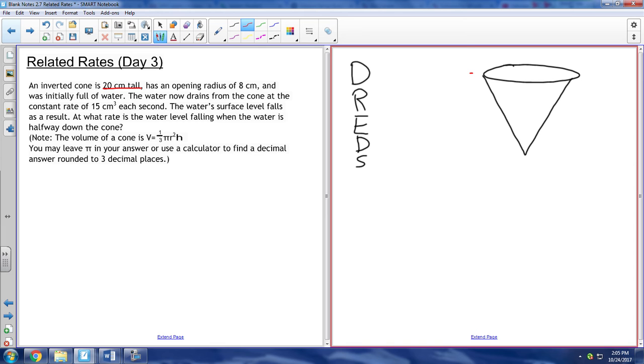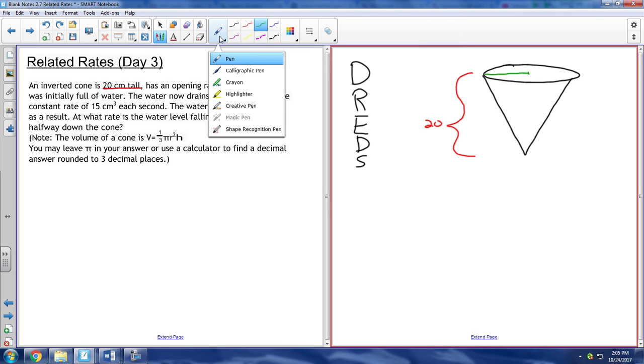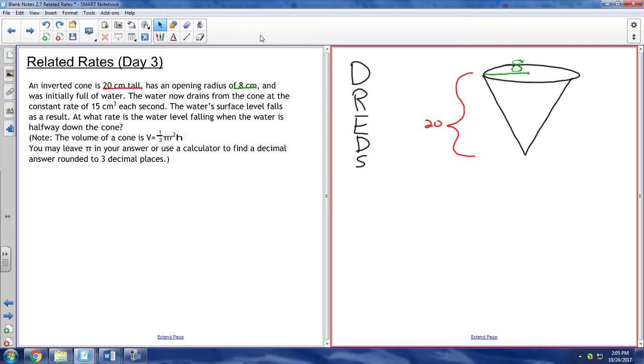So we have dreads here. We want to draw a diagram, so we've done that. We've drawn a diagram of what the cone looks like. We see that it's 20 centimeters tall, so we want to write down how tall it is. So there's 20 centimeters for the height of the cone. And then they also said it had an opening radius of 8 centimeters, which is here at the top. But you'll notice that if you go somewhere else in the cone, the radius is not 8. So just be aware that the radius is not always 8.